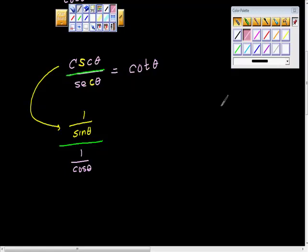Now, hopefully you're remembering this, that this is a complex fraction. Complex fractions look like this and are solved like this. We take the numerator times the reciprocal of the denominator.